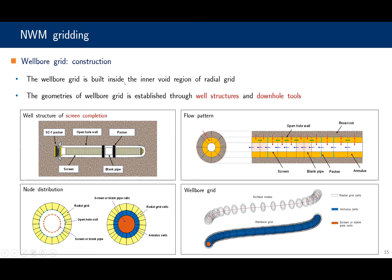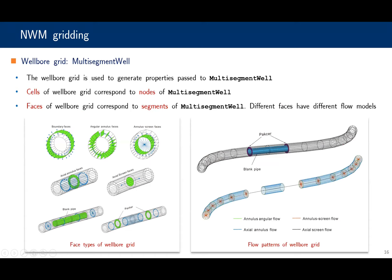Finally, we build the wellbore grid. The wellbore grid is built inside the void region of the radial grid. The geometries of the wellbore grid are established through the wire structures and the downhole tools. Taking a screen completion as an example, it has two flow spaces: the screen, the two-toed packers, and the blank pipe. The wellbore grid is used to generate properties passed to the multi-segmented well model and will not be assembled into the final global grid. Cells of the wellbore grid correspond to the nodes, and the faces of the wellbore grid correspond to segments. Different faces have different flow models.